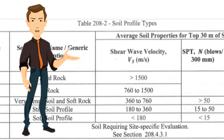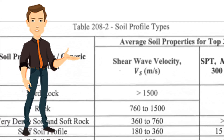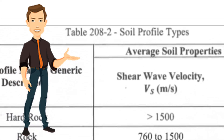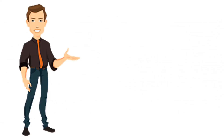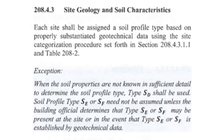Next is the soil profile type, found in Chapter 2, Minimum Design Loads, Table 208-2. There are six soil profile types: SA, SB, SC, SD, SE, and SF. Your soil profile type depends on the characteristics of the soil where you will build. As an exemption, if you do not know the soil profile type, you must use SD.